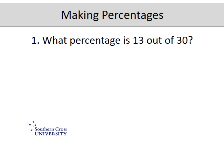In this one we need to find what percentage 13 is out of 30. We need to look at which one of these numbers represents our total. This is our part of the total. So written as a fraction this will be 13 out of 30. And to make it a percentage we need to times by 100.